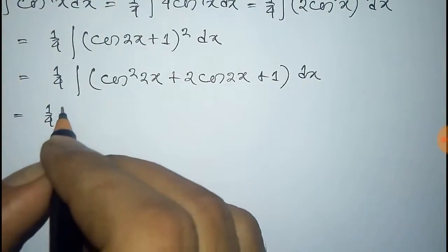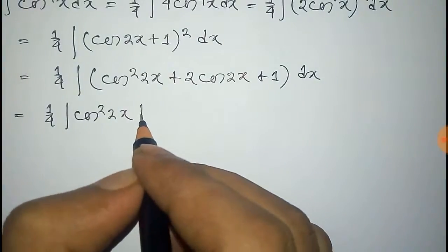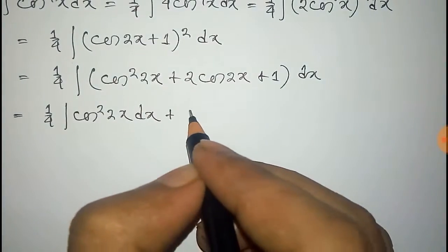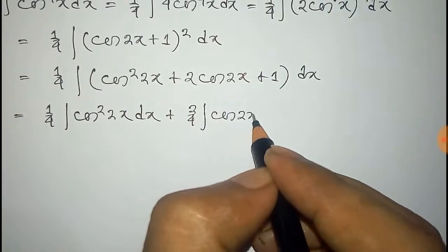Now expanding this we get one fourth integral of cos square 2x plus 2 cos 2x plus 4 dx.